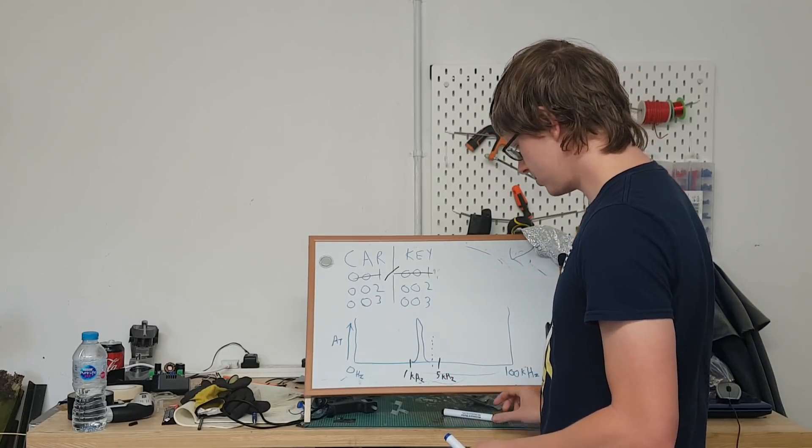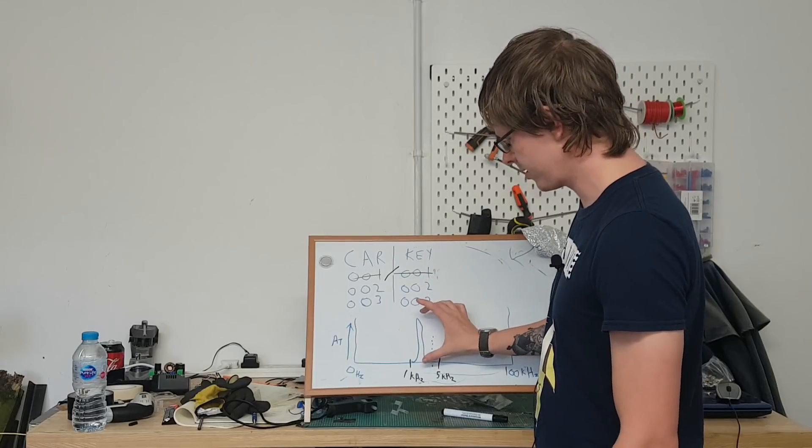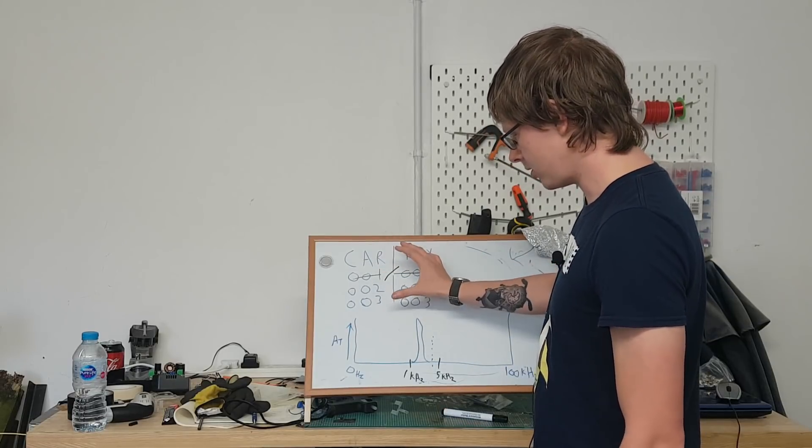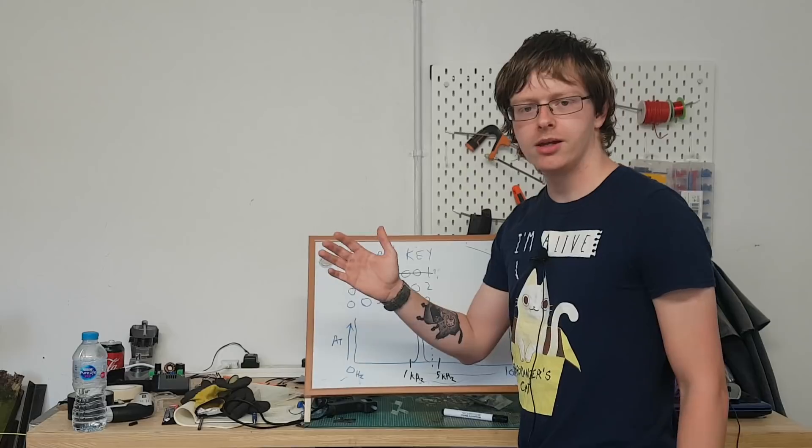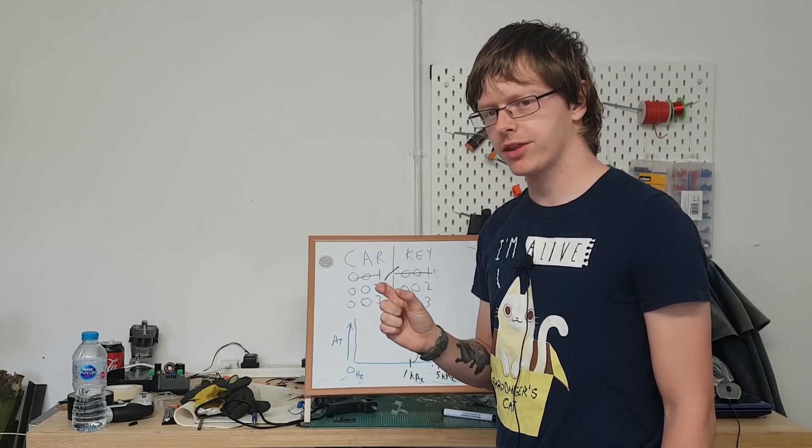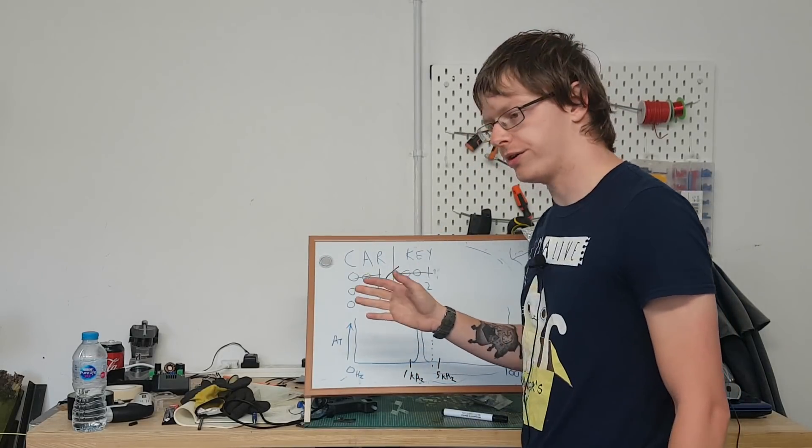And that's all well and good. So what you've done there is effectively you've stopped the signal from going through. But how do you get that signal? How do you actually get the code? And that is again down to bandwidth. So there's quite a large jamming signal here and that's blotting the car's receiver.